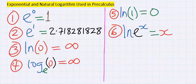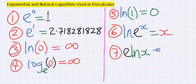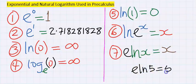Next, ln(e^x) is equal to x. That is, ln(e^9) is equal to 9, ln(e^2) is equal to 2. Next, e^(ln x) is equal to x. That is, e^(ln 5) is equal to 5.